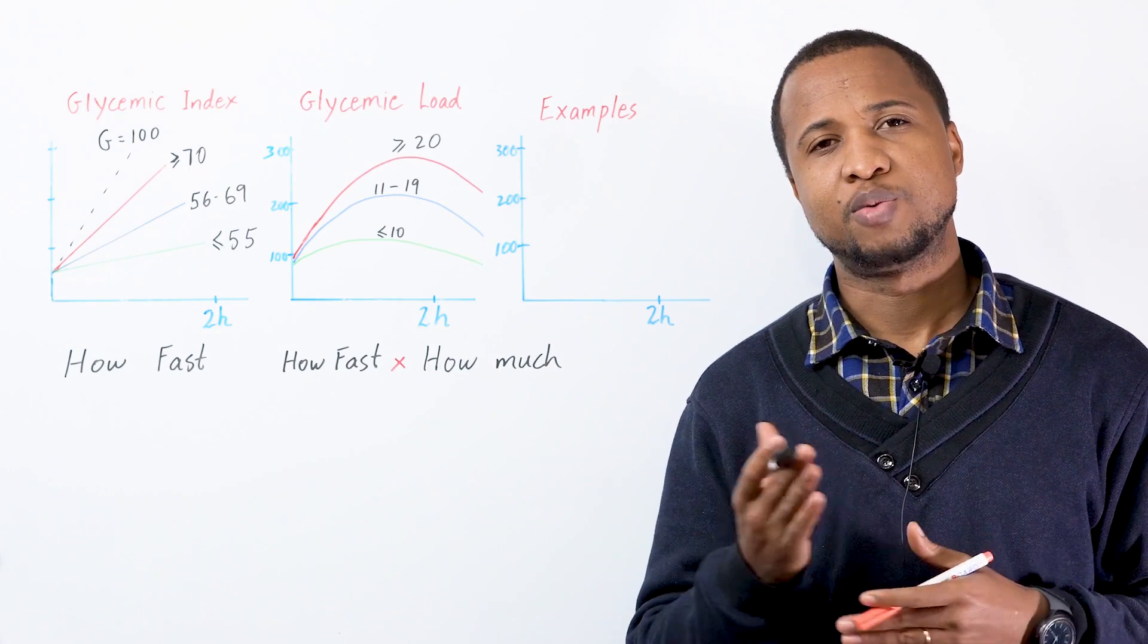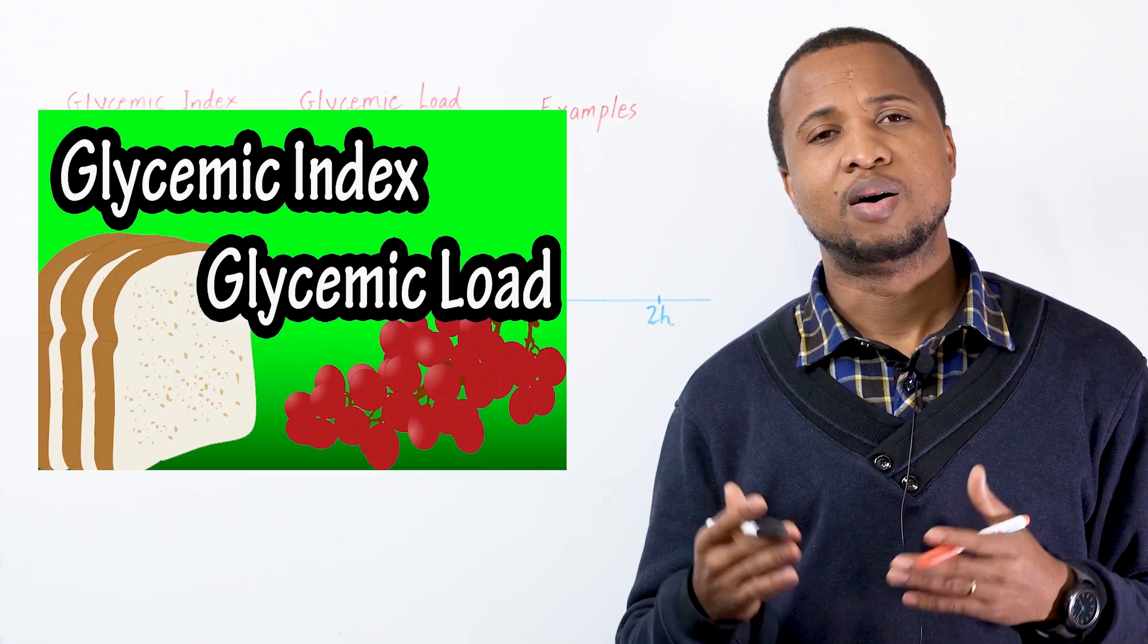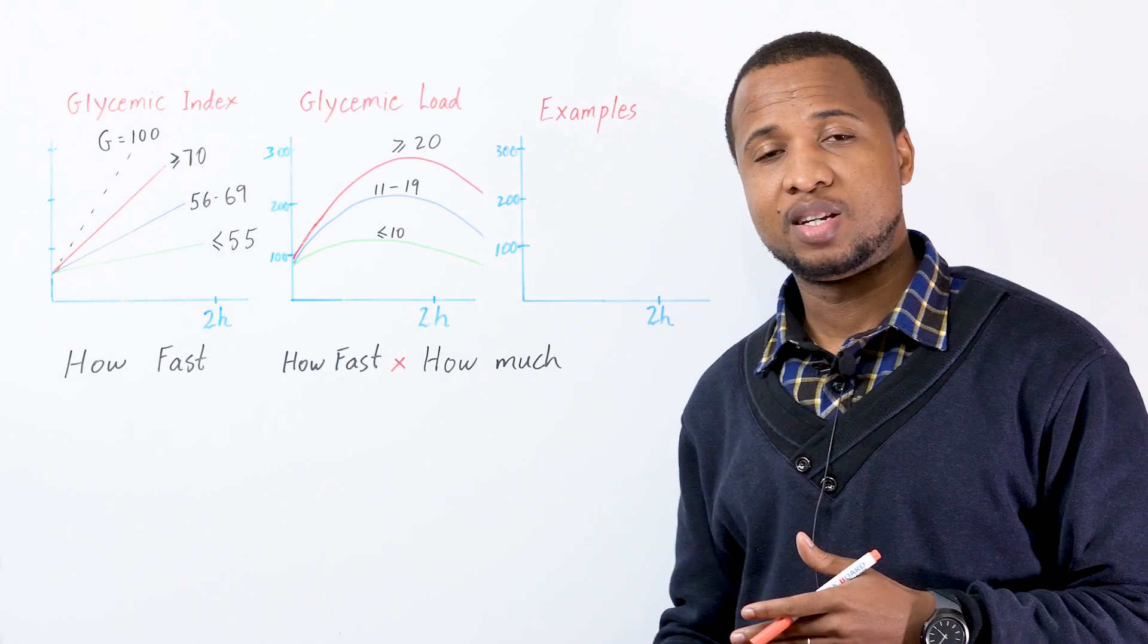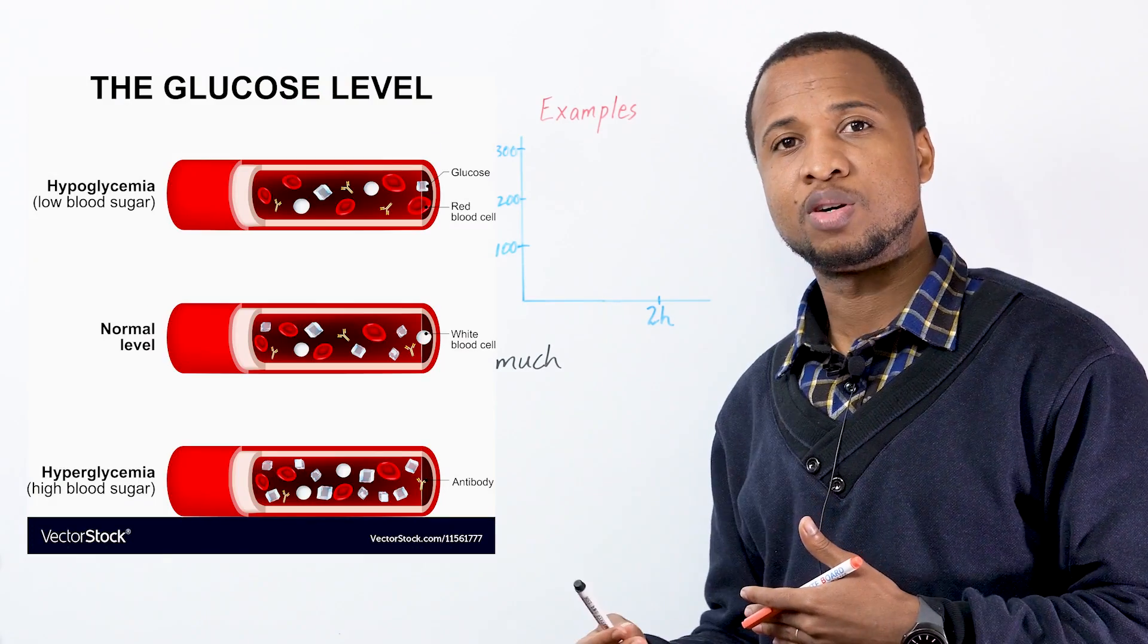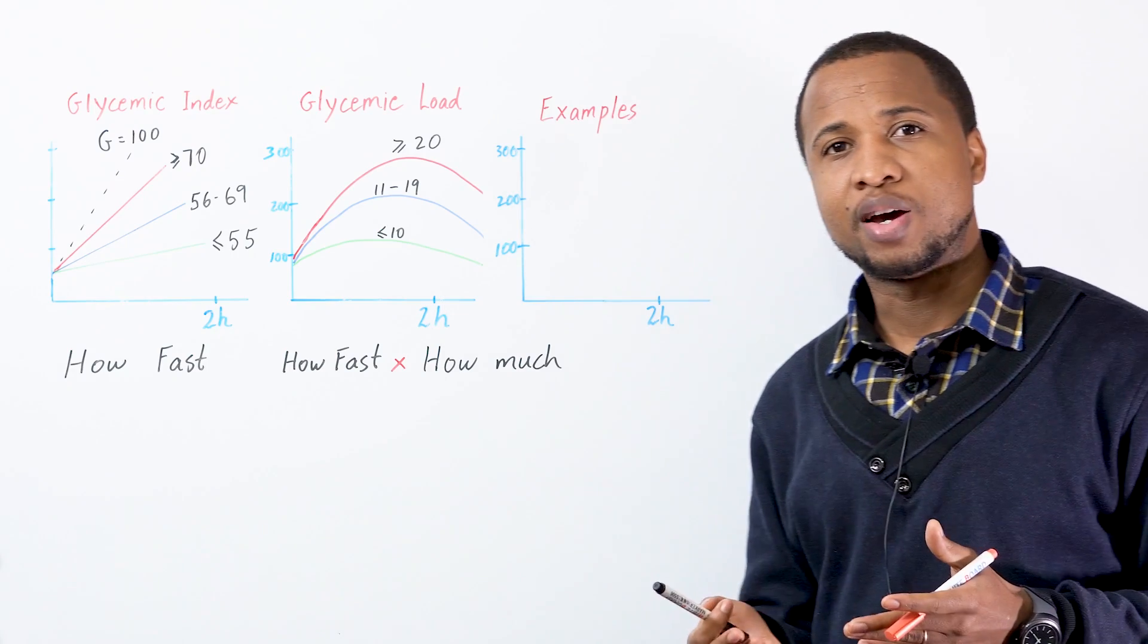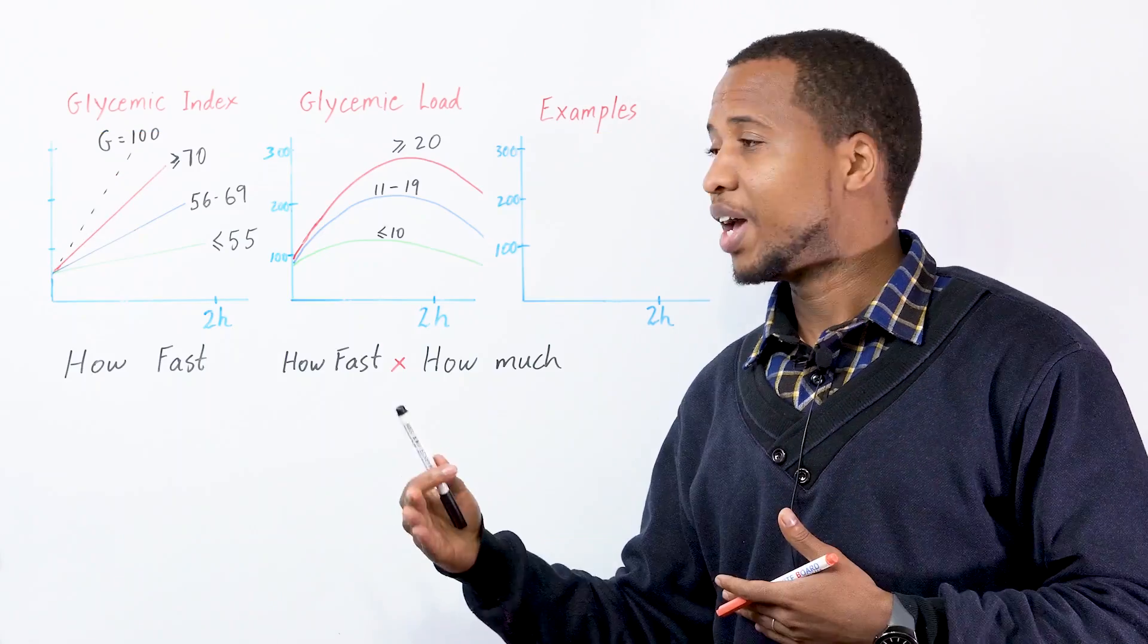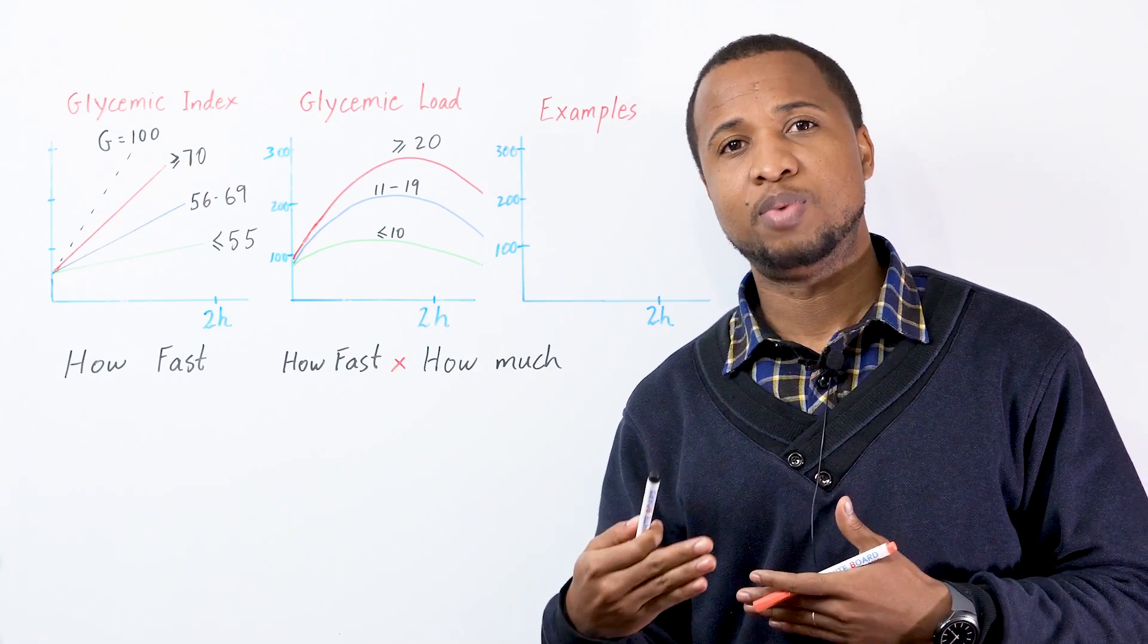Now there are two measurements that we use. One is glycemic index and the other one is glycemic load. Now a lot of people confuse them, but I'll make it easy for you today. Glycemic index is a measurement of how fast what you eat changed to blood sugar, changed to glucose. But how do we know that? We compare it to glucose that has a value of 100 because it's glucose.